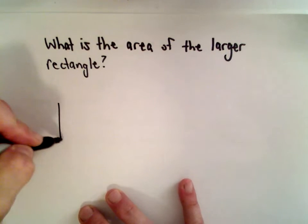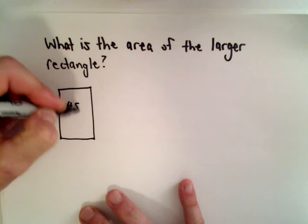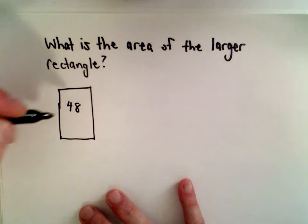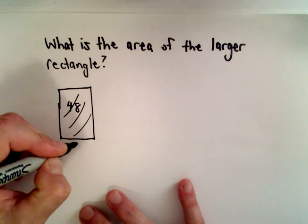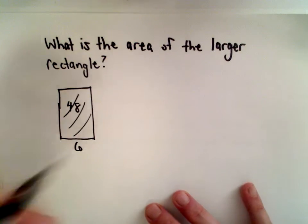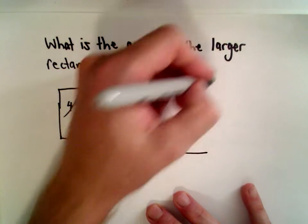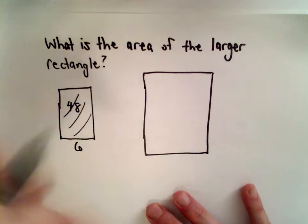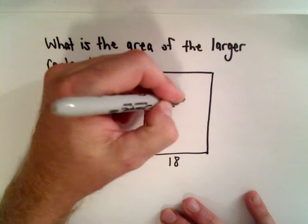So let me make a little picture here. There's the smaller rectangle that has an area of 48 square inches. We know its smaller side length is 6 inches long. Then we have our larger rectangle. And its smaller sides have a length of 18, and again, we just want to know the area.